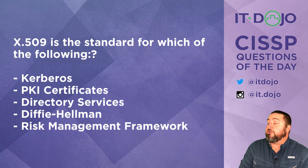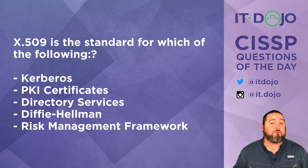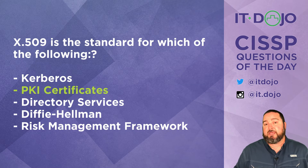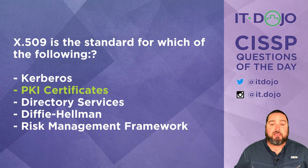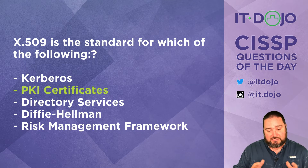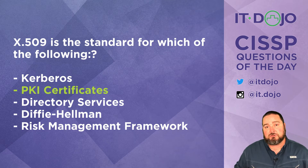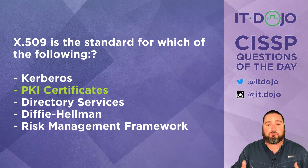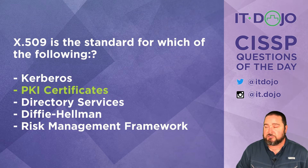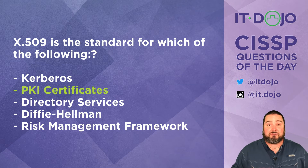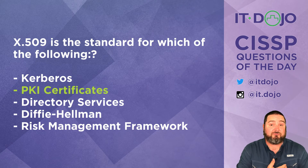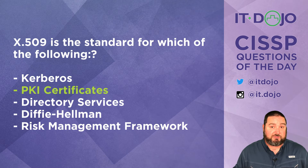The right answer here is X.509 is the standard for public key infrastructure certificates, or PKI certificates. X.509 describes the exact structure of how certificates are built, what all the individual fields are, as well as how they work with certificate authorities and how all that signing works. None of the other answer choices are even marginally correct — it's all about public key infrastructure and the structure of their certificates.